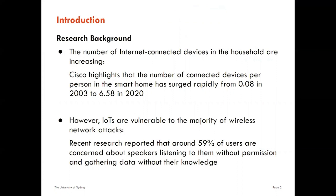However, many internet-connected devices have poor security measures and can reveal private data and information. Recent research reported that around 59% of users are concerned about speakers listening to them without permission and gathering data without their knowledge. Therefore, questions related to anomaly detection have swiftly gained attention considering how to defend the risk of disclosing private data in the smart home.